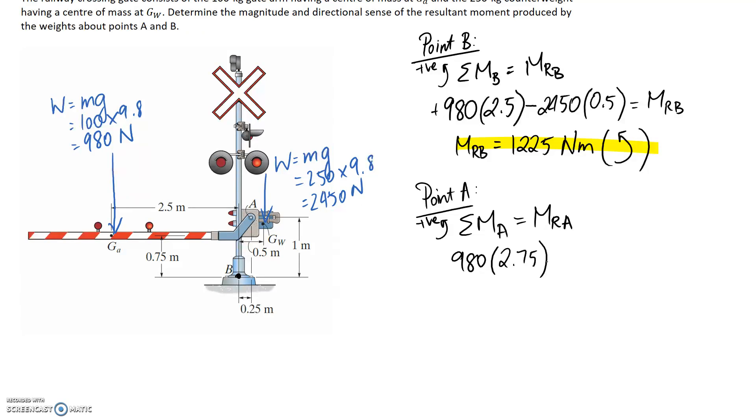And again, we need to think about the direction. This is going to try and push us so that the whole structure rotates anti-clockwise about point A. So it's going to go in as a positive, same as the sign convention.